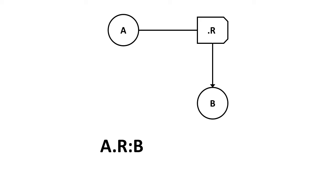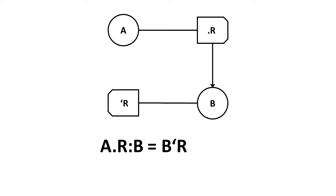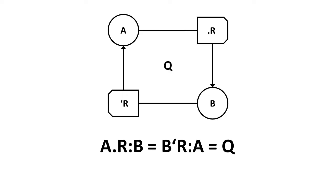Let's extend this with a third deduction: if Bob is Alice's uncle, then Alice is Bob's niece. In memetics, niece is the inverse relation of uncle. Every relation intrinsically has an inverse relation. For any A.R:B that is true, we automatically know the inverse is true, which is written B'R:A = Q. This is memetic notation for an inverse relation — this is the fundamental theorem of memetics.